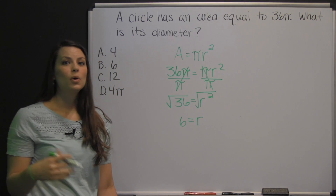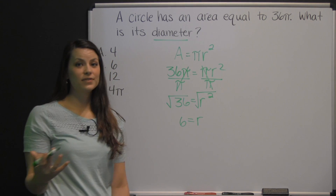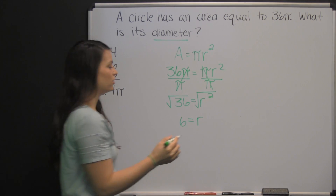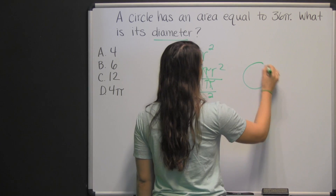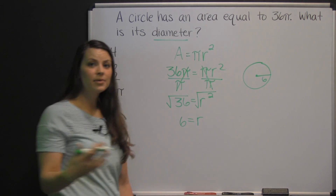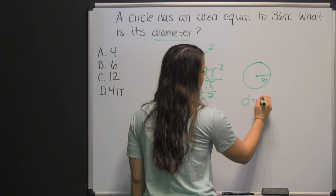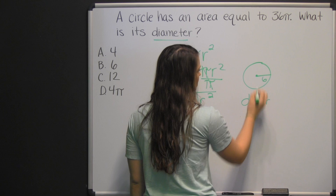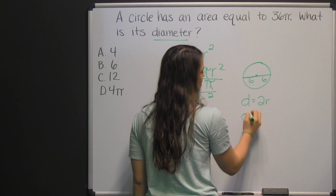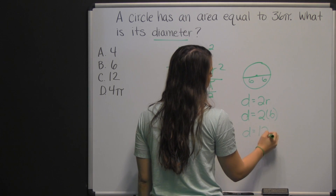The square root of thirty-six is either positive six or negative six, but since a radius, which is a length in a circle, can't be negative, it's positive six. That's the radius. What we were asked to find is the diameter. The diameter of a circle is the distance all the way across the circle through the center. The diameter is simply twice as long as the radius, so the diameter is two times the radius, which is six, meaning the diameter is twelve.